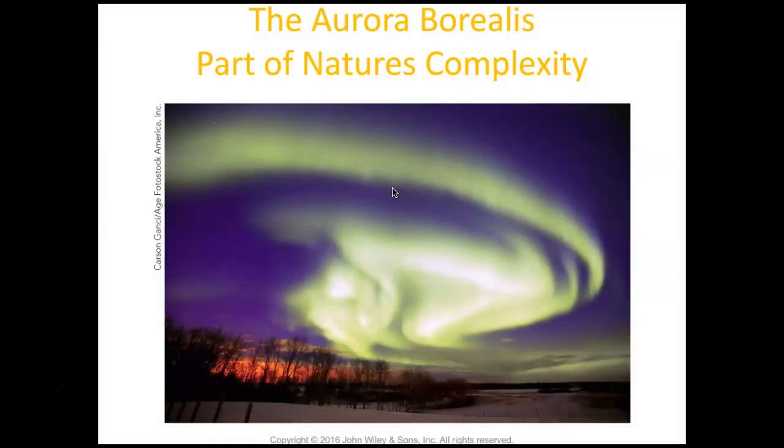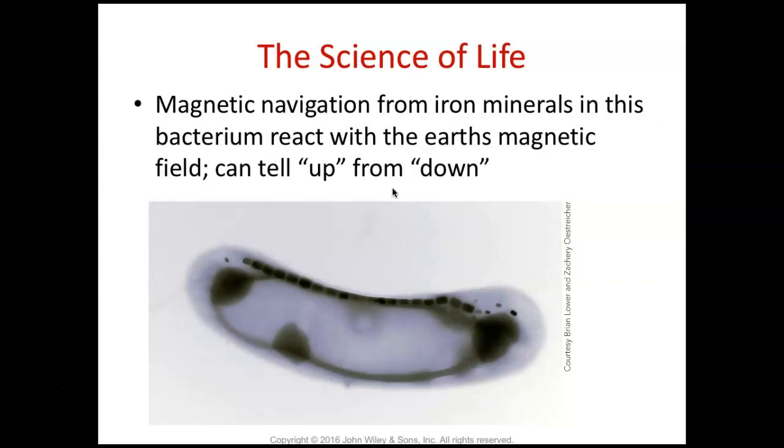Aurora Borealis is actually a phenomenon that happens in the sky when earth's magnetic field interacts with particles that come from the sun. And so you get these really bright lights, and it's just another example of seeing magnetic fields. Science has also been able to show that organisms are able to utilize earth's magnetic field to navigate. Something as simple as the magnetic navigation from iron minerals in this bacterium, they react with the earth's magnetic field and let them know which weighs up and which weighs down. But birds have been shown to do this, and many other organisms have been shown to be able to understand and interact with the magnetic field of earth.